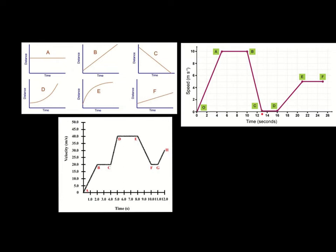Then from D to E we see an increase in speed — this is showing acceleration again. From E to F, it's a horizontal line but they've got a speed of about 5 metres per second, so this horizontal line represents someone moving at constant speed.